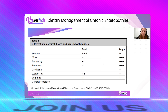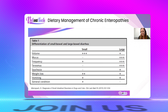The only thing I'll say about this chart is that you can still have mucus with small bowel diarrhea. It's just usually going to be more mixed in the fecal ball, not coating the outside — which makes sense when you think about the fact that the colon has so many goblet cells lining it, and that's the last exit point before the pet defecates.